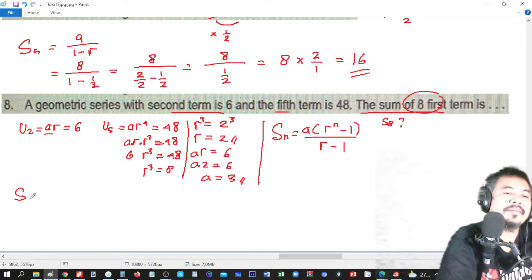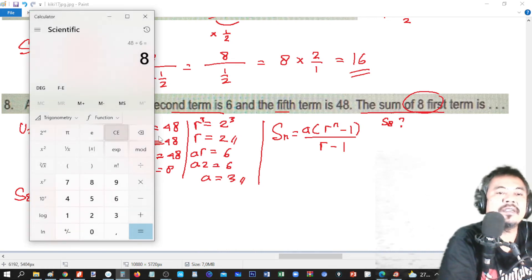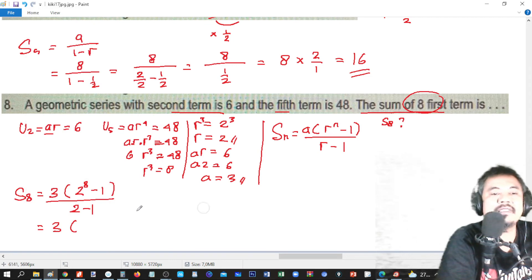S8 is equal to A is 3, in the parentheses, R is 2, so 2 to the power 8 minus 1, divided by 2 minus 1. 2 minus 1 is equal to 1, so this is 3 times 2 to the power 8. You can use calculator. 2 to the power 8 is 256.